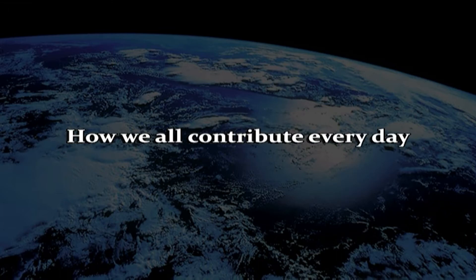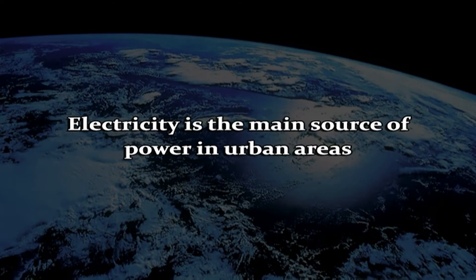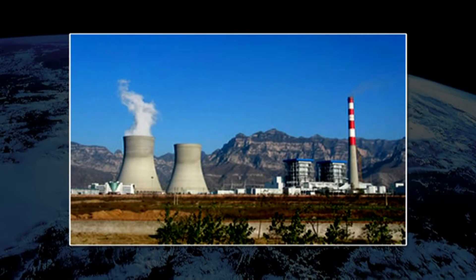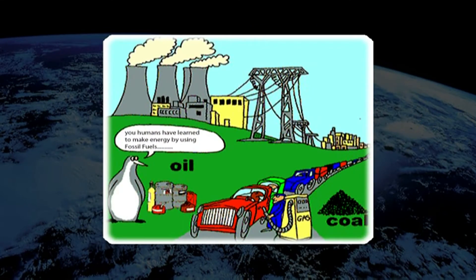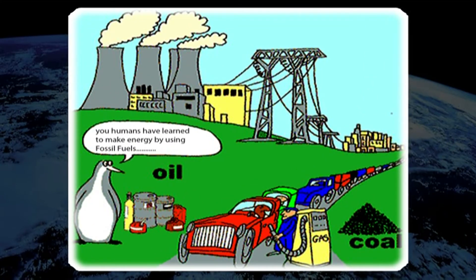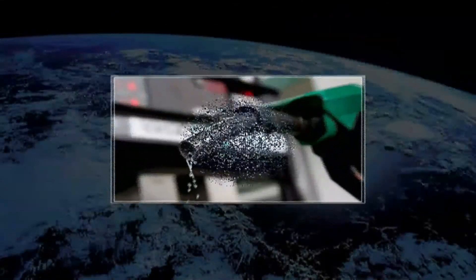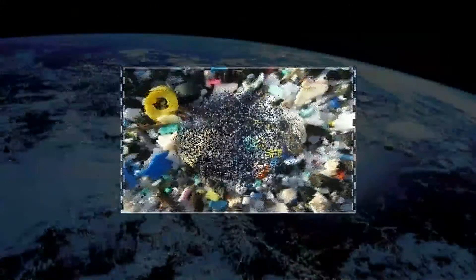Now, how we all contribute every day — all of us in our daily lives contribute our bit to this change in the climate. Electricity is the main source of power in urban areas. All our gadgets run on electricity generated mainly from thermal power plants. These thermal power plants are run on fossil fuels, mostly coal, and are responsible for the emission of huge amounts of greenhouse gases and other pollutants. Cars, buses and trucks are the principal ways by which goods and people are transported in most of our cities. These are run mainly on petrol or diesel, both fossil fuels. We generate large quantities of waste in the form of plastics that remain in the environment for many years and cause damage.